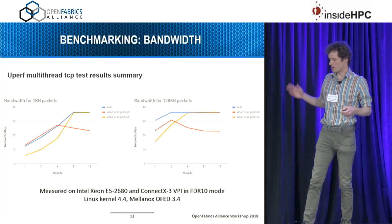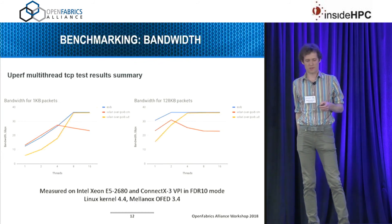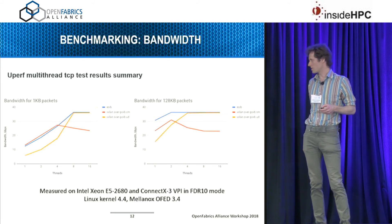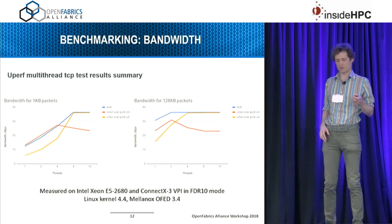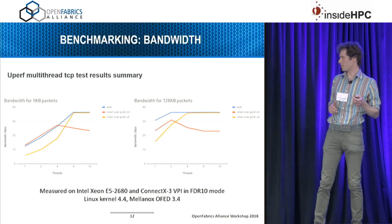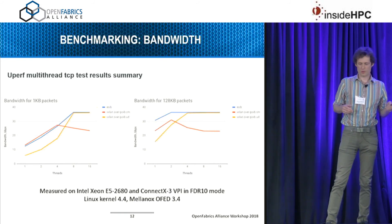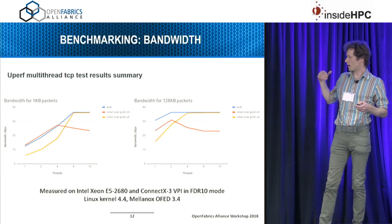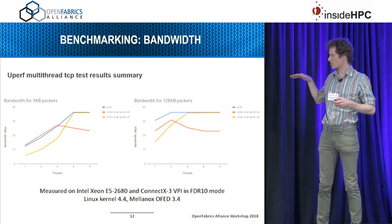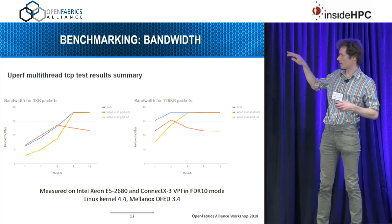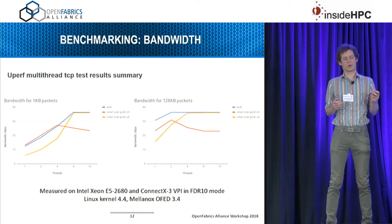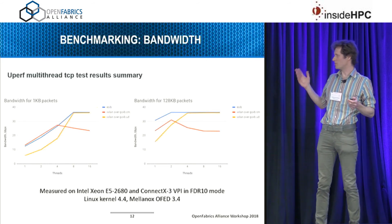Here are some benchmarking results comparing UIB with VXLAN over IPoIB in UD and connected modes. We used two Intel Xeon hosts with ConnectX-3 cards running in FDR10 mode, running Linux 4.4 kernel with Mellanox OFED 3.4. Unfortunately we didn't have newer hardware by then, but the numbers are still quite representative. IPoIB in connected mode scaled poorly for multi-threaded setups, while IPoIB in UD mode showed poor performance in single-threaded tests. UIB took the best of both. I would also add that we haven't done any performance optimization or tuning so far, so these numbers could potentially be improved further.